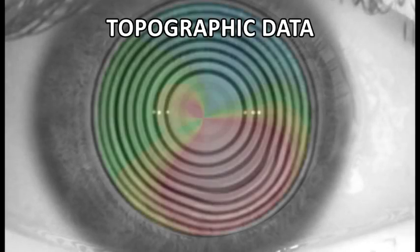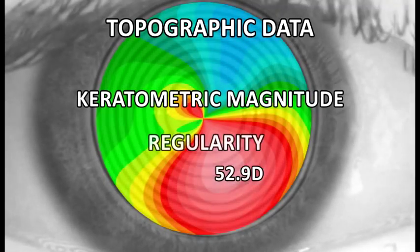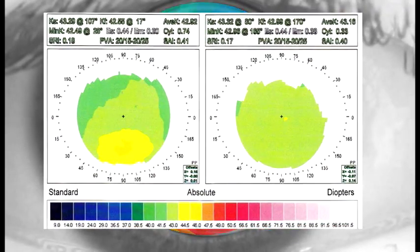Interpretation of topographic data should consider keratometric magnitude, regularity, and in-between eye symmetry as described by Rabinowitz.